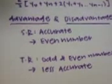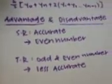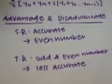And for trapezoidal rule, the advantage is you can solve it even though it's odd number or even number. But however, it's less accurate than Simpson's rule.